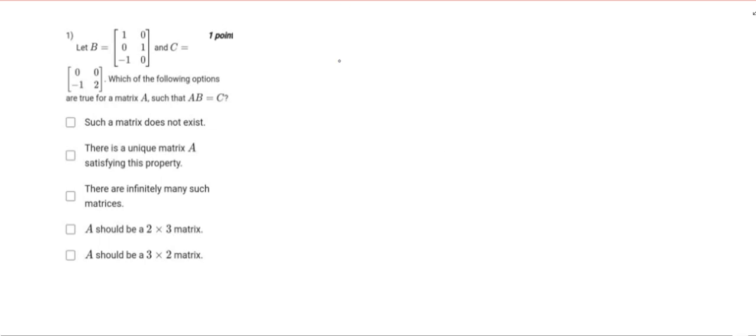In this question, it's given that there is a matrix B and C, then there are certain conditions or options. Which of the following options are true for matrix A, such that AB is equal to C?